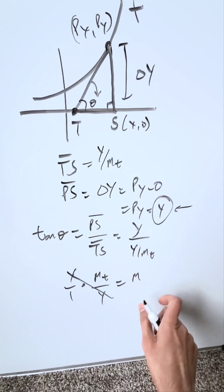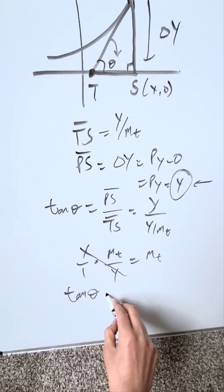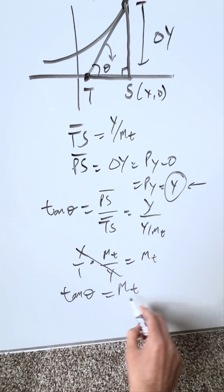We'll make this a subscript, because that's what it is. Your relevant formula is this: tan theta is always equal to your slope of your tangent line.